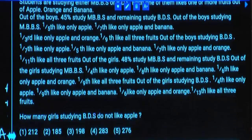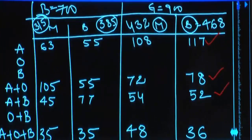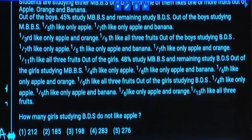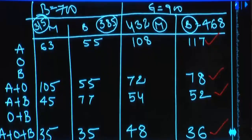How many girls studying BDS do not like apple? Observe the last digits are different. Your total number ends with 8. The sum of the four values — 7 plus 8 plus 2 plus 6 — ends with 3. 8 minus 3 ends with 5. So the answer should end with 5, and there is only one such option.